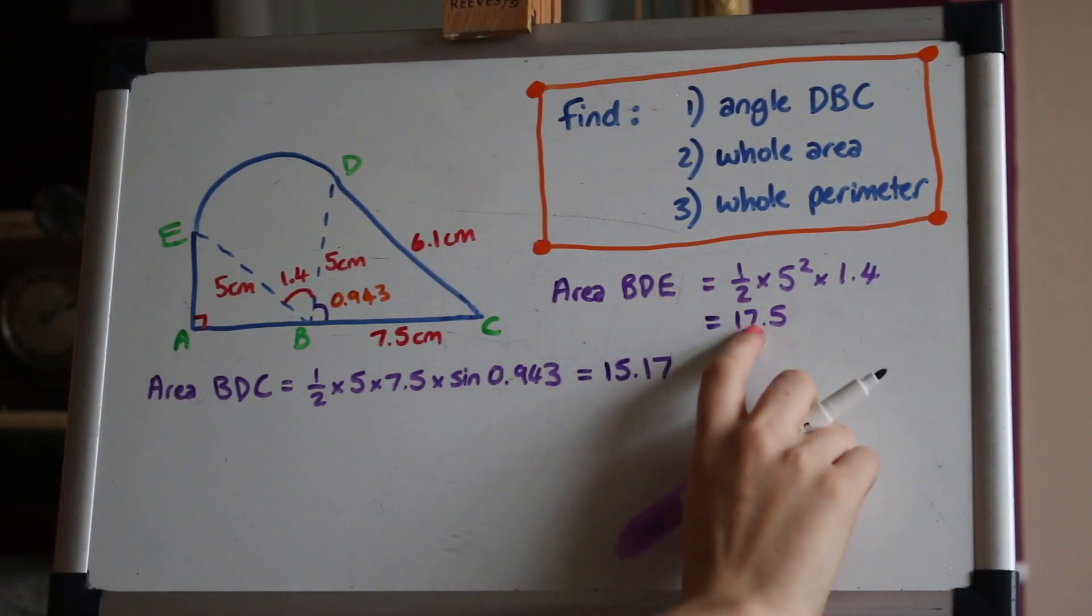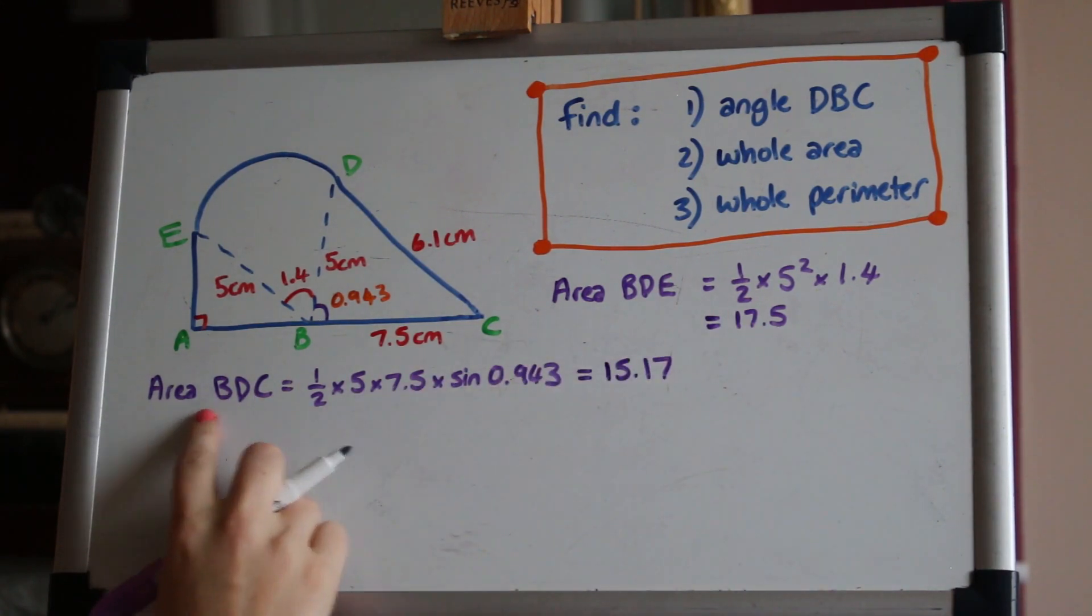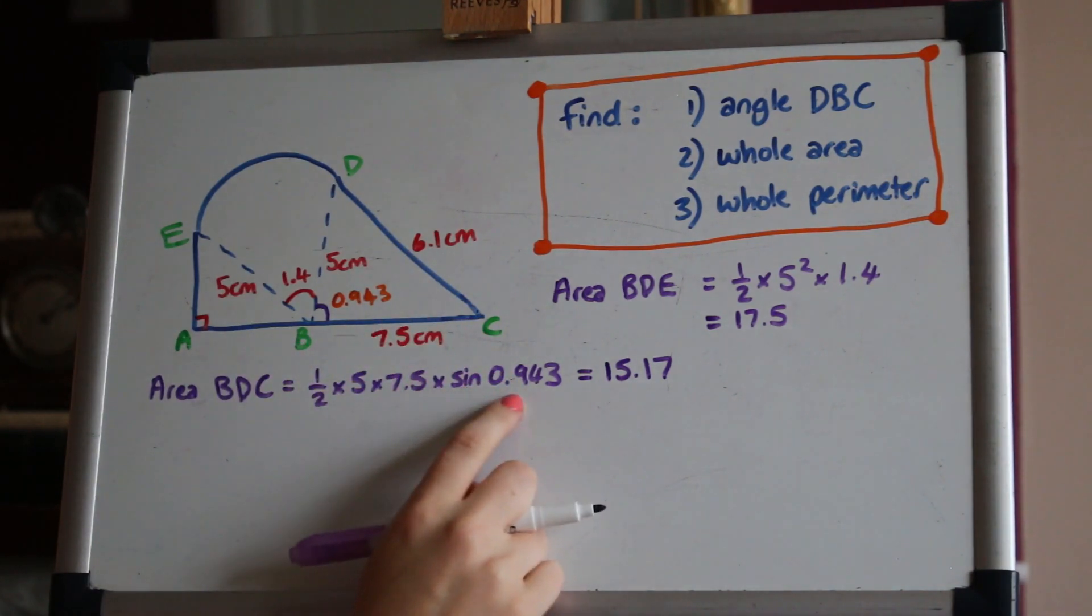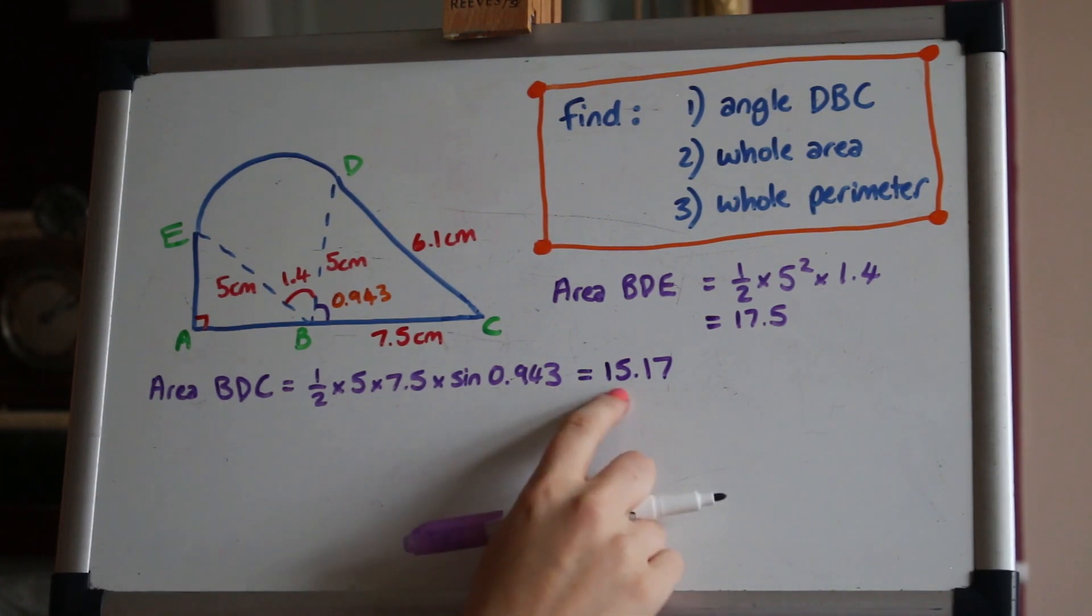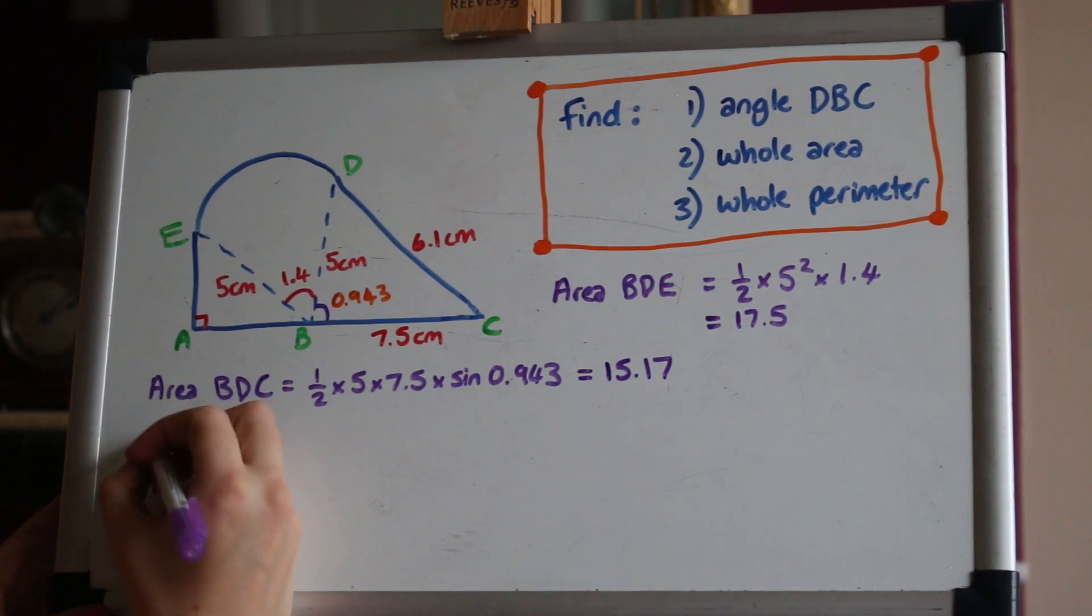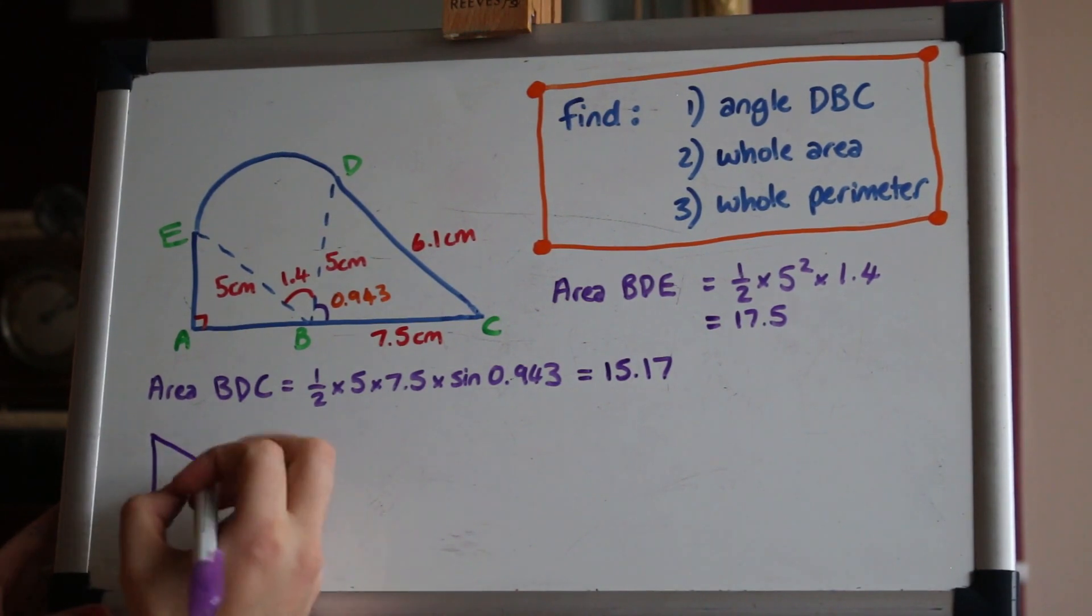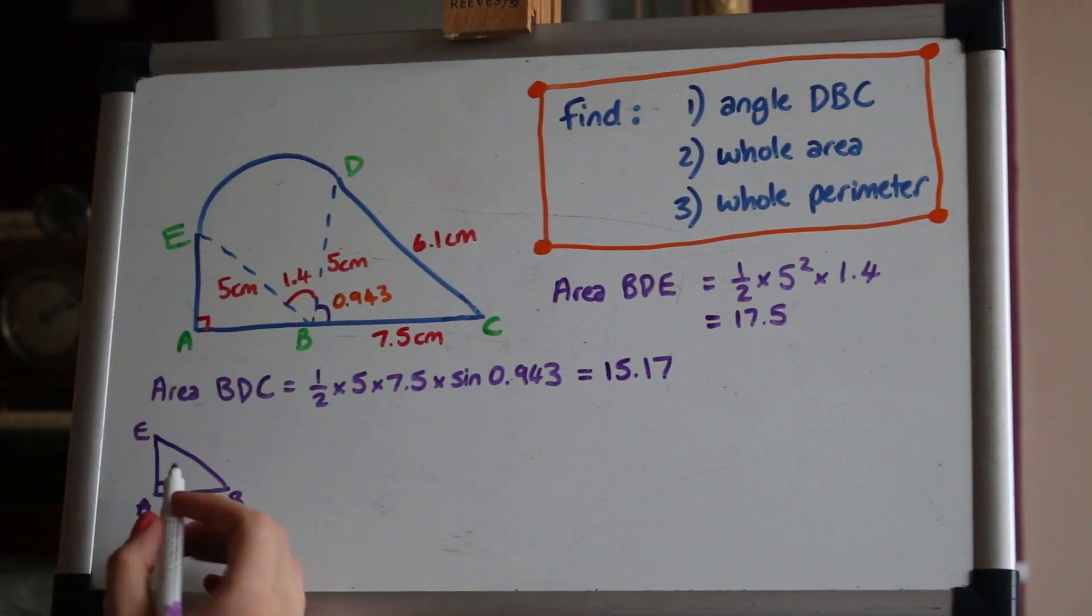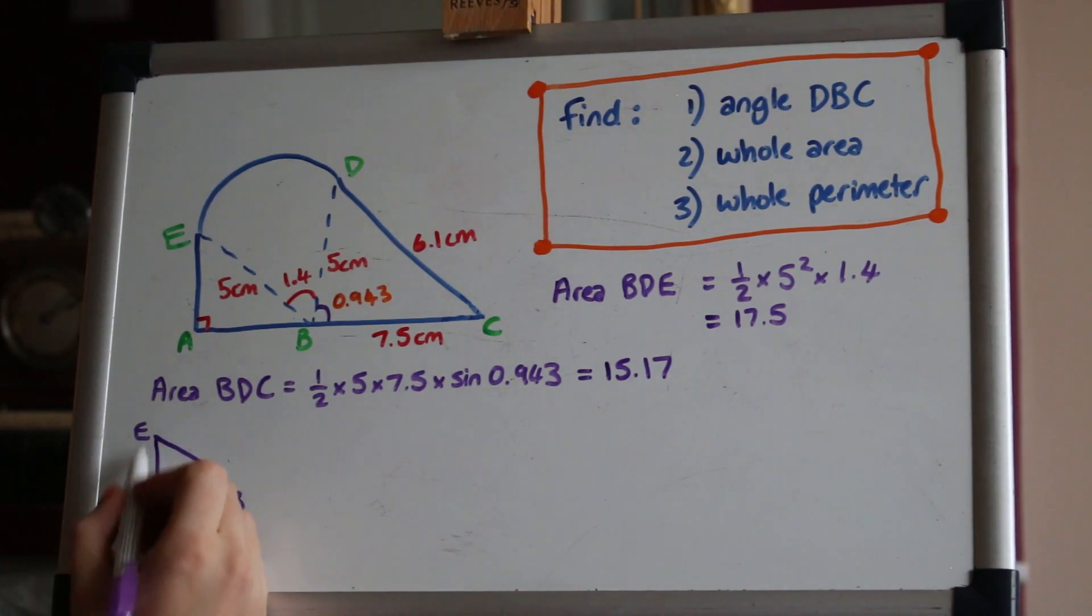Okay so the area of the sector is 17.5. I've also worked out the area of the triangle B, D, C by using a half A, B sine C. You can draw that triangle out and relabel it again if that helps you but for that I got a 15.17. Now to get the area of this little triangle A, B, E.